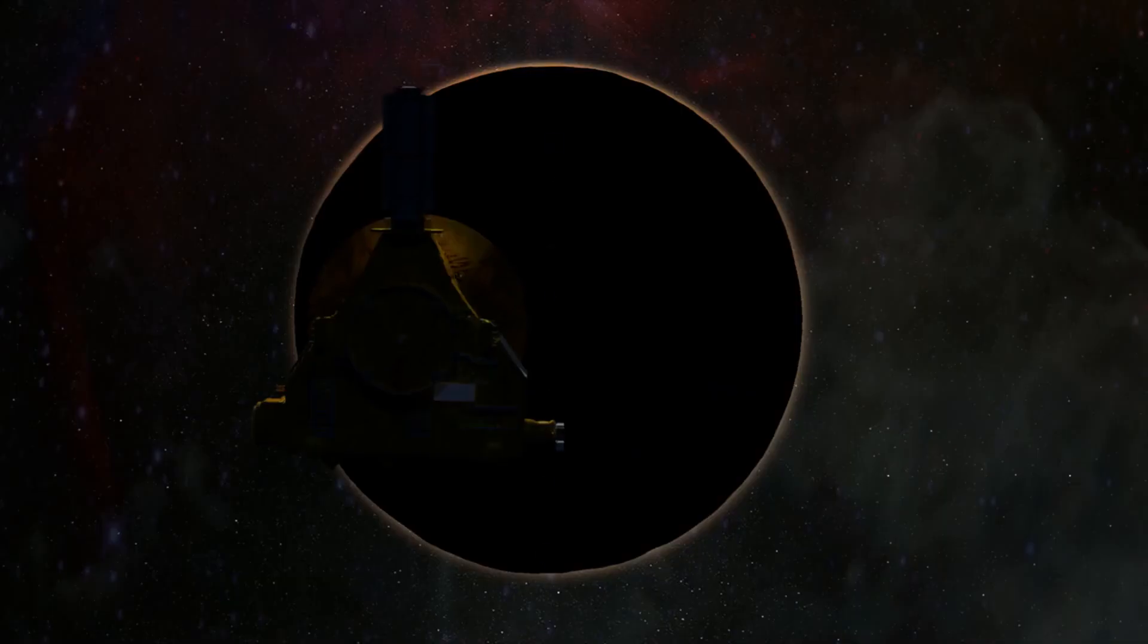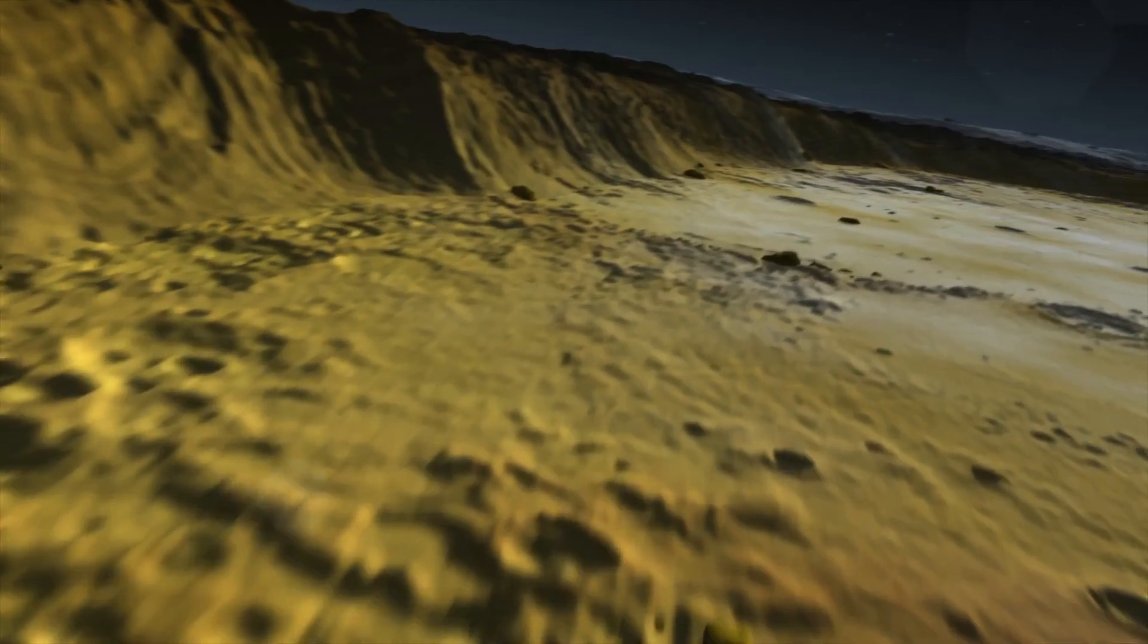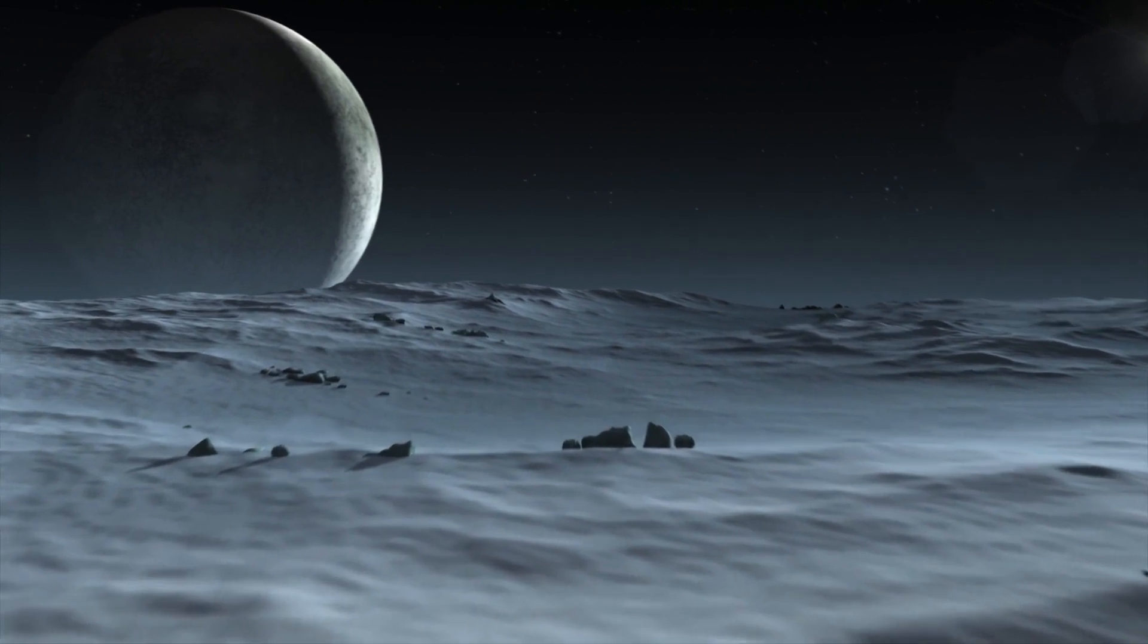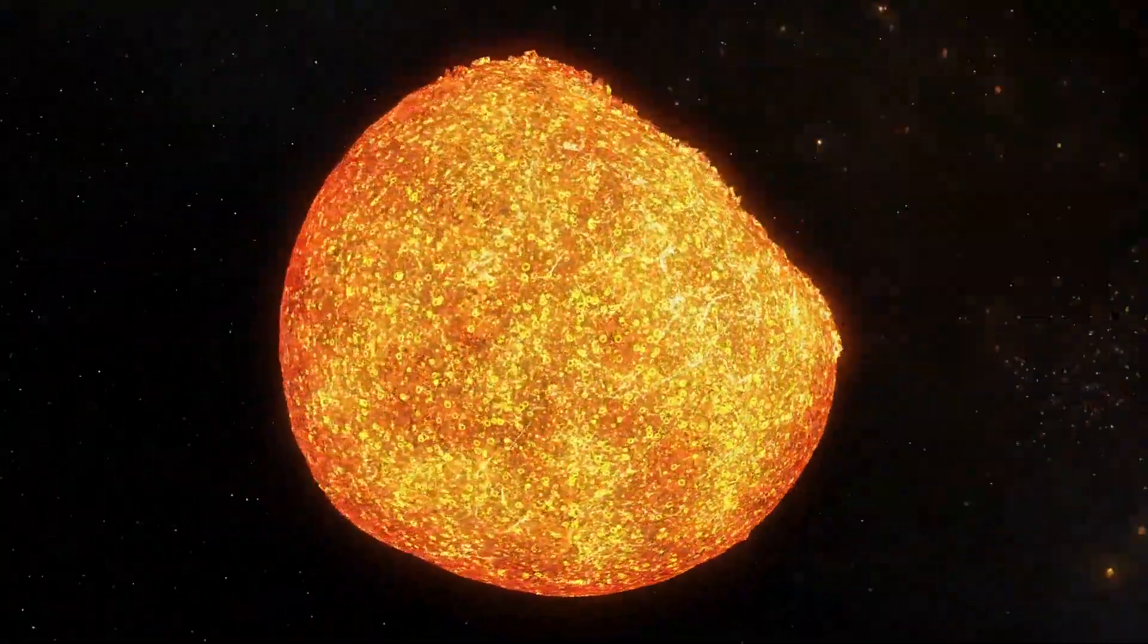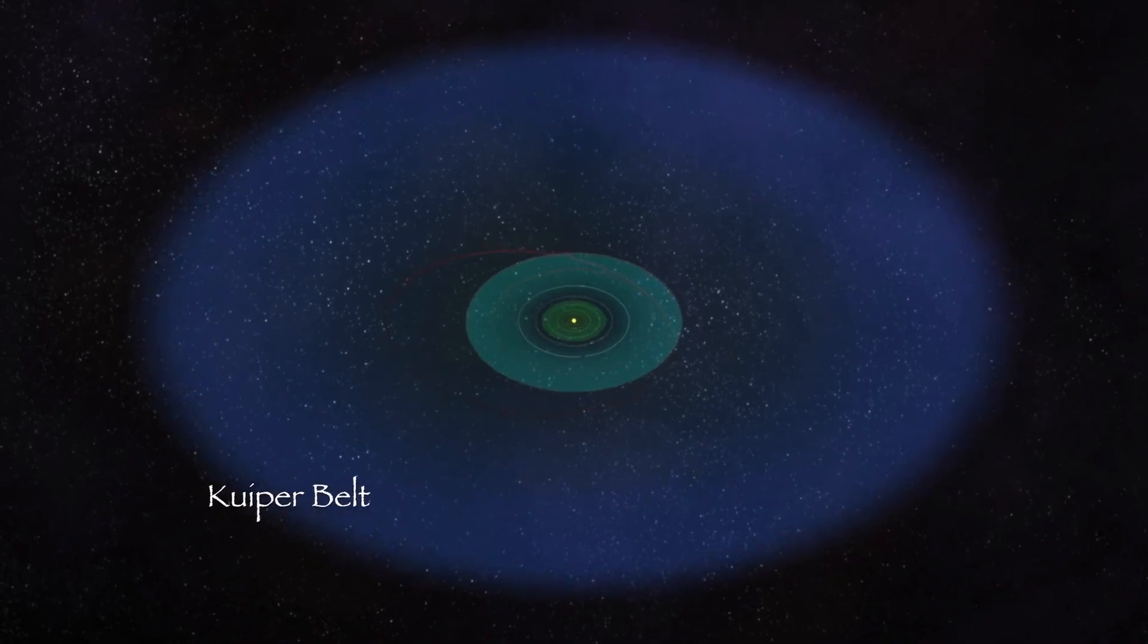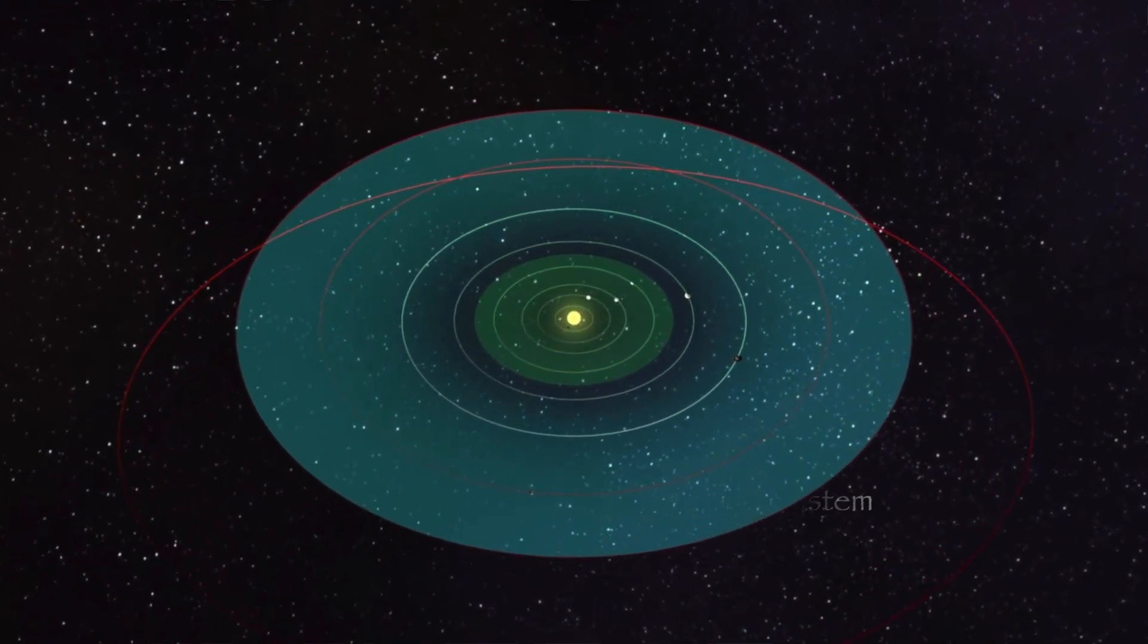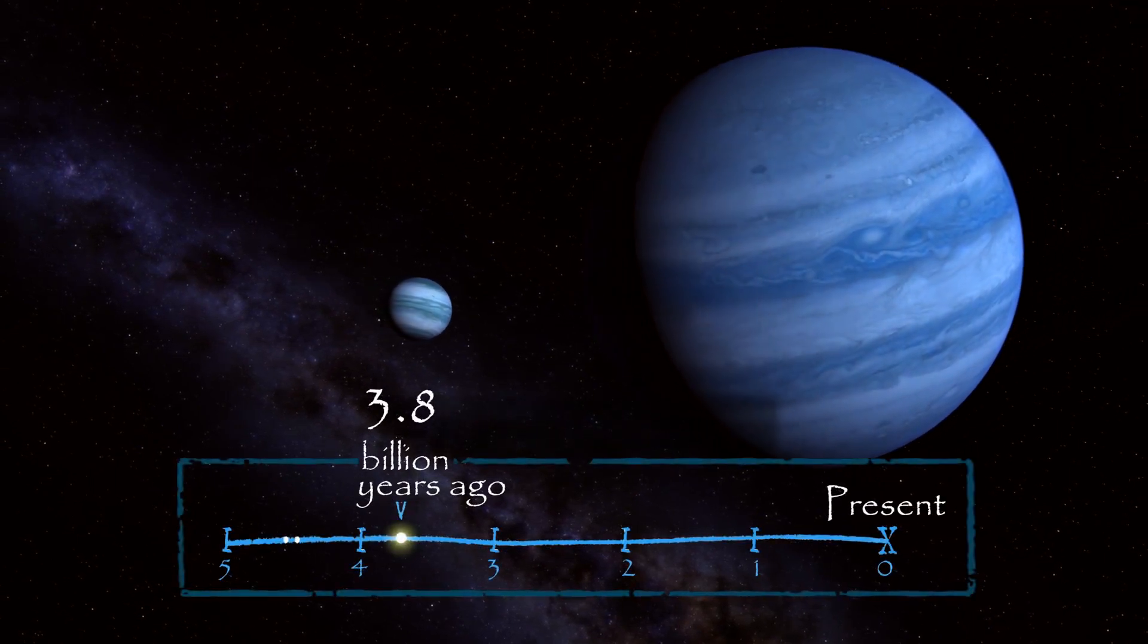The New Horizons probe finds evidence for roving planets within our solar system. While charting ancient craters on Pluto and on the surfaces of its moons, the science team discovered many craters are the same age. This suggests that they were formed by a single event. Even way out here, tiny Pluto was smashed by a wandering planet. The Pluto catastrophe may be related to other planetary migrations in the outer solar system. It was noticed that the exact orbits of the giant planets, particularly the outer giant planets, the icy planets, Uranus and Neptune, can be explained by their migration outward.